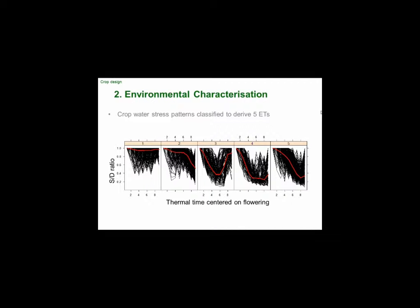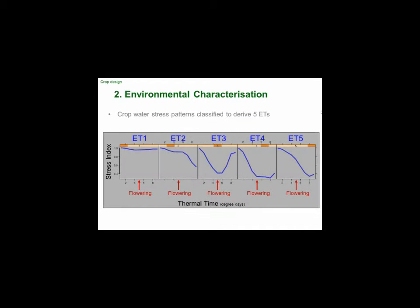There are many thousands of simulations in here and we look at five key environment types right across the sorghum growing region in northeast Australia. You have one environment type with low stress, then they progressively get more severe terminal stresses, and one that gets relieved after flowering. Types three and four are very severe terminal stresses; one gets relieved after flowering; another shows a progressively increasing stress. These are the stress types we can characterise sorghum with — almost anywhere in Australia we can say it will likely experience a stress similar to one of these five.